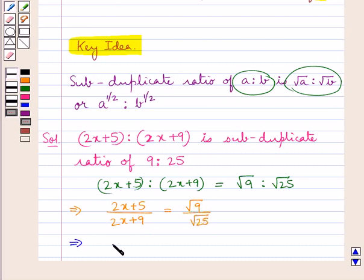Further, we get (2x + 5)/(2x + 9) = 3/5.